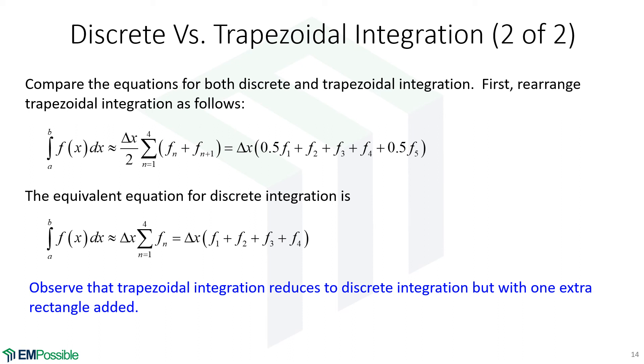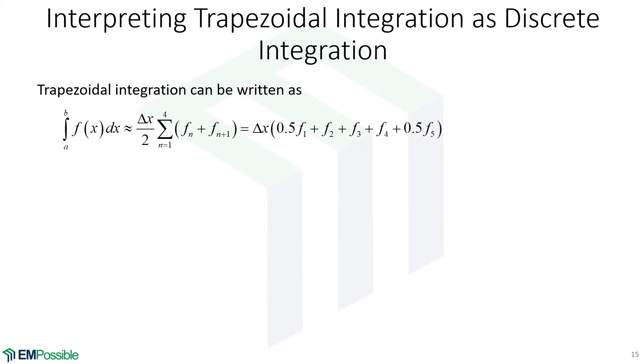Now, here's the big question. We drew these two with the same number of rectangles versus trapezoids on the previous slide. And there was clearly more red for the discrete integration. How can I say that these are the same thing with the same error?